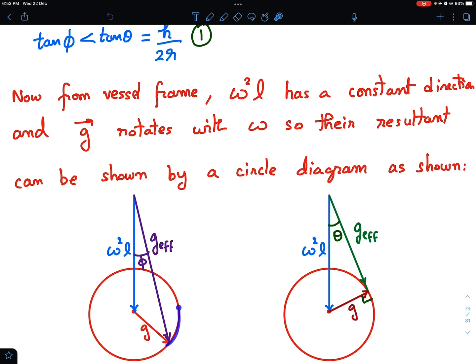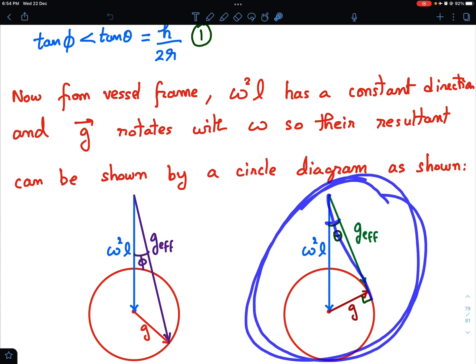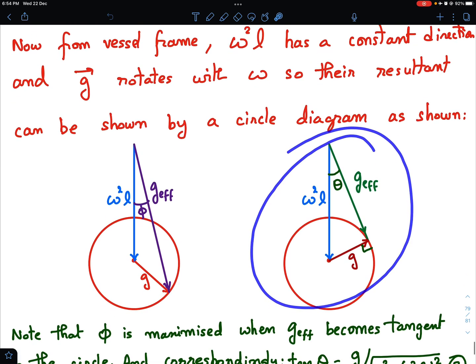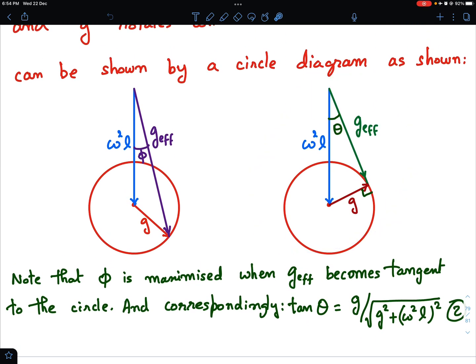What will be the maximum value of phi? As the G vector rotates along the circle, we know that G effective will be, as G comes here, then G effective comes like this. Phi keeps on increasing until this G effective becomes tangent. From secant, it becomes tangent. At that time, your phi is maximum. This is the situation when phi is maximum or we can say phi is equal to theta because theta was the maximum value of phi. And this is what we want and even at this situation, it should not spill. From this figure, note that phi is maximized when G effective becomes tangent to this circle.